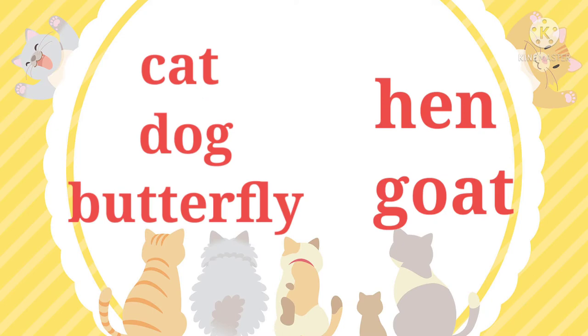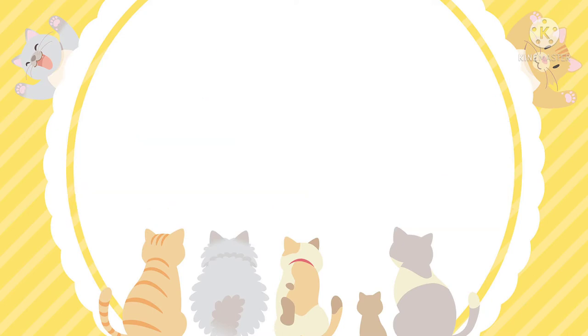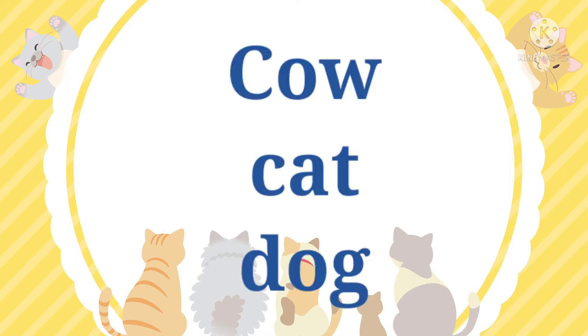Children, look at your surroundings. You can see so many creatures around us. What are they? Cat, dog, butterflies, hen, goat, etc. Don't you keep pets in your house too? Yes, of course — cow, cat, dog, etc.